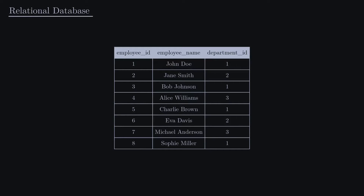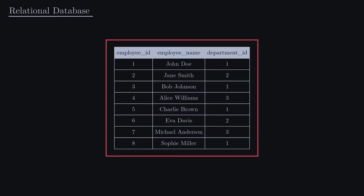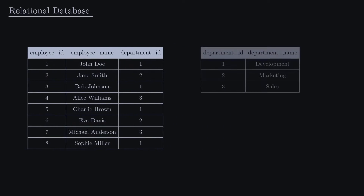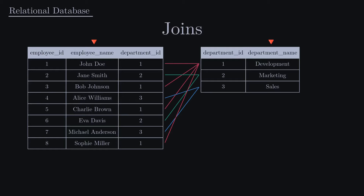In a relational database, data is stored in tables using columns and rows. The structure of tables in a relational database is rigid and well-defined. For example, in the database of a workplace, the employees table will be structured to only contain data for an employee, while the departments table will contain data for their departments. Most times, we may need to get information that may be contained in multiple tables — for example, the names of each employee and their respective departments. To achieve this, we make use of joins, a way of retrieving data across multiple tables.